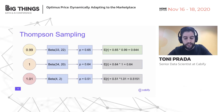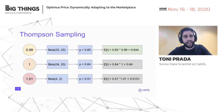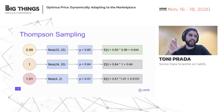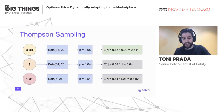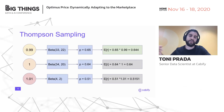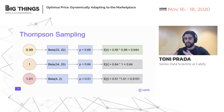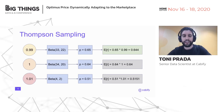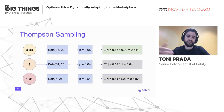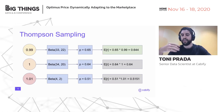Thompson sampling has three nice properties. First, there is no hyperparameter at all, which is really cool. Second, because the beta distribution is wider at the beginning and thinner over time, we explore more at the beginning and explore less and less as time passes and we have a better understanding of how each factor works. Third, even when exploring, we try more the options that look best — if there's a factor we already know is worst, we won't give it more tries.